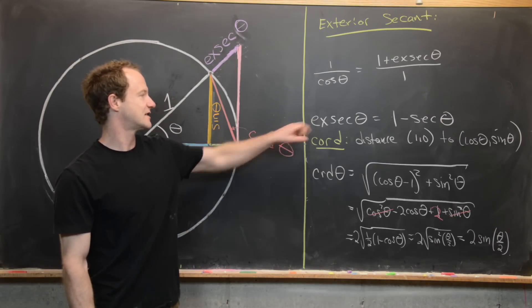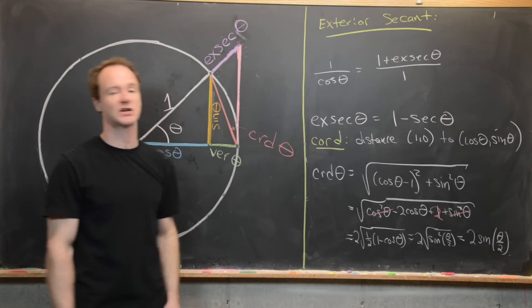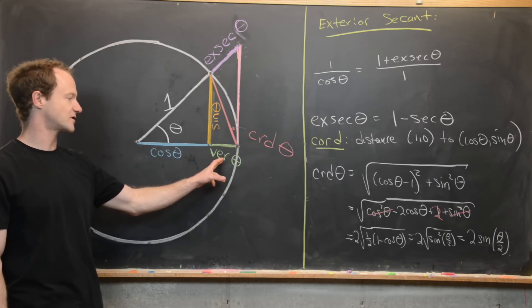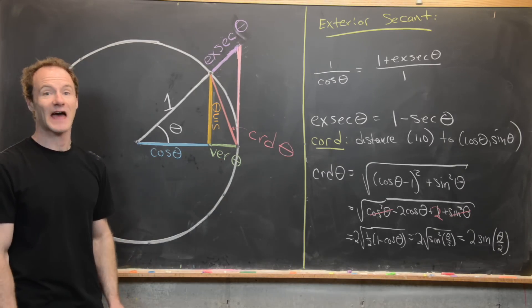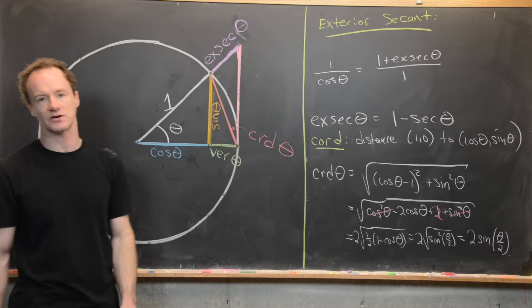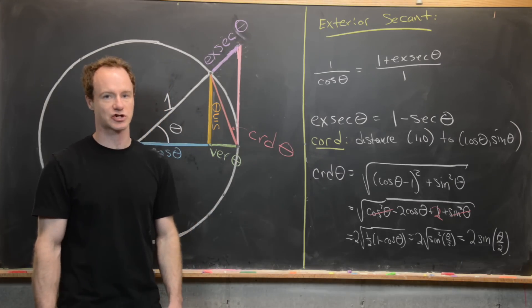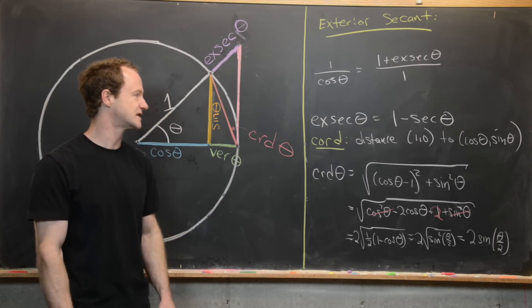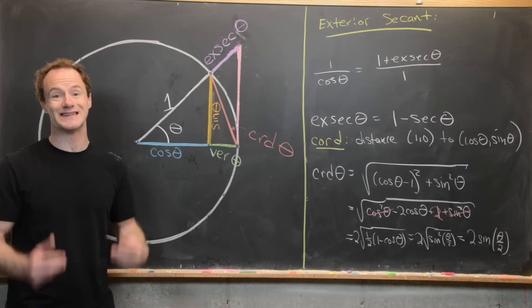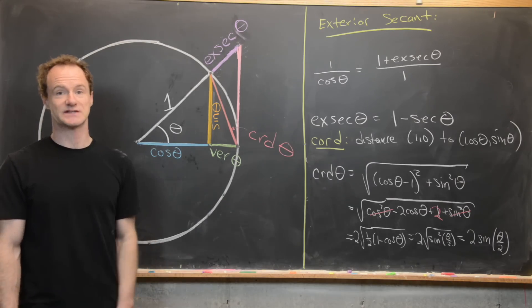So we've written the chord function in terms of sine, the exsecant in terms of secant and cosine, and the versed sine and haversine in terms of cosine. There are a few more historical trigonometric functions, but they can all be written in terms of our normal day-to-day trigonometric functions. That's a good place to stop.